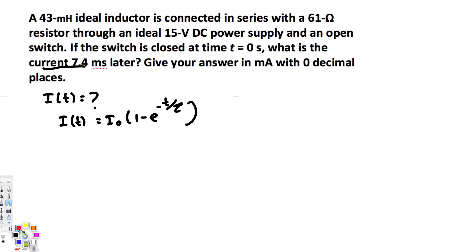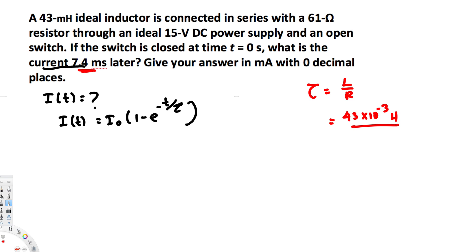The time provided is 7.4 milliseconds. We need to find I-naught and the time constant. For an inductor circuit, the time constant is tau equals L over R, where L is inductance and R is resistance. So tau equals 43 times 10 to the minus 3 henries divided by 61 ohms, which gives 0.705 times 10 to the minus 3 seconds.